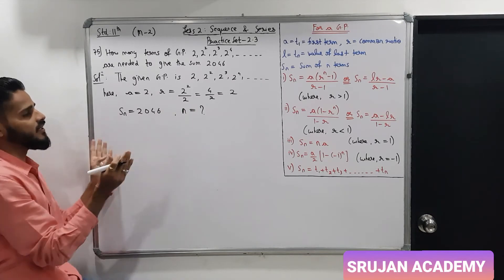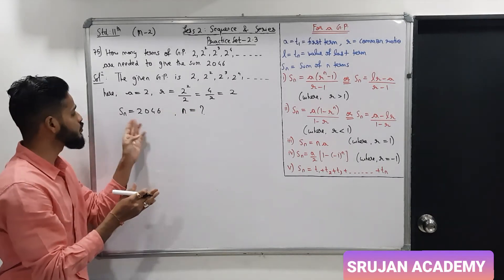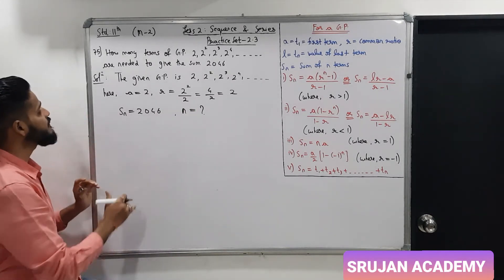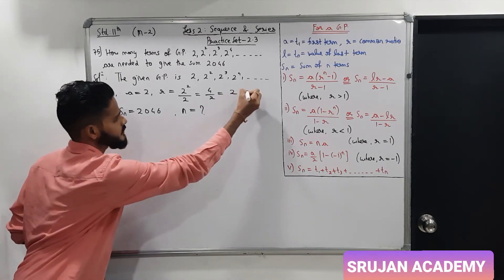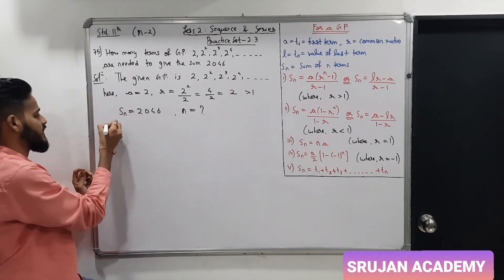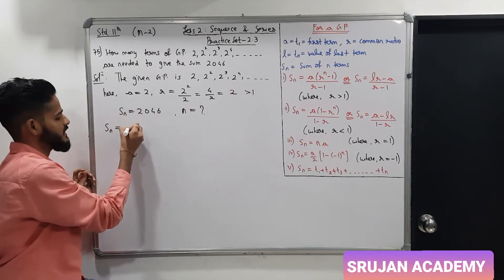How many terms addition will be 2046. Here r is 2 which is greater than 1. So Sn first formula is a into R raise to n minus 1 upon R minus 1.